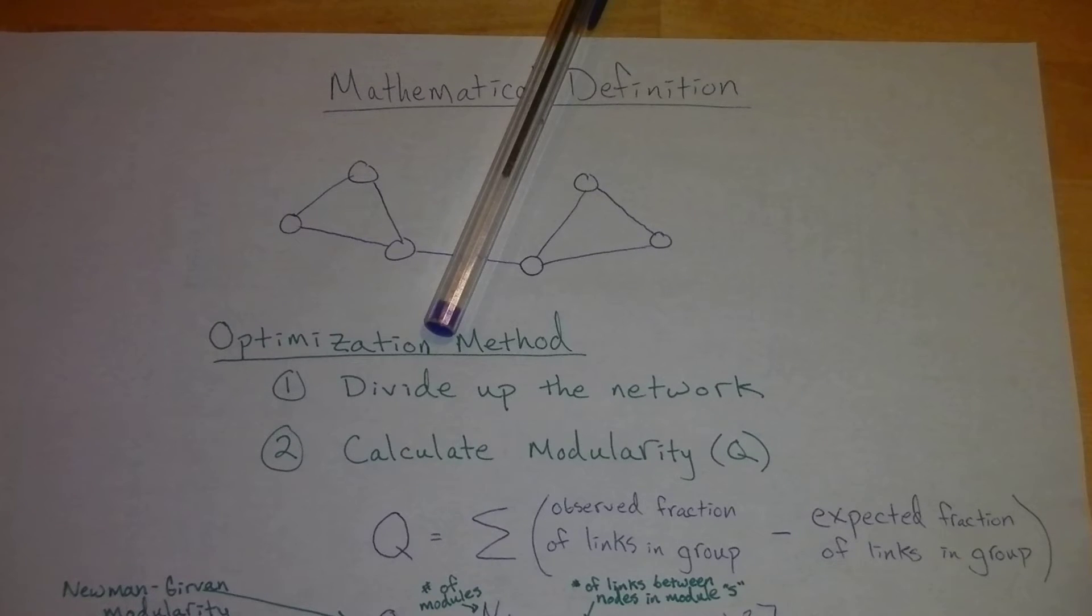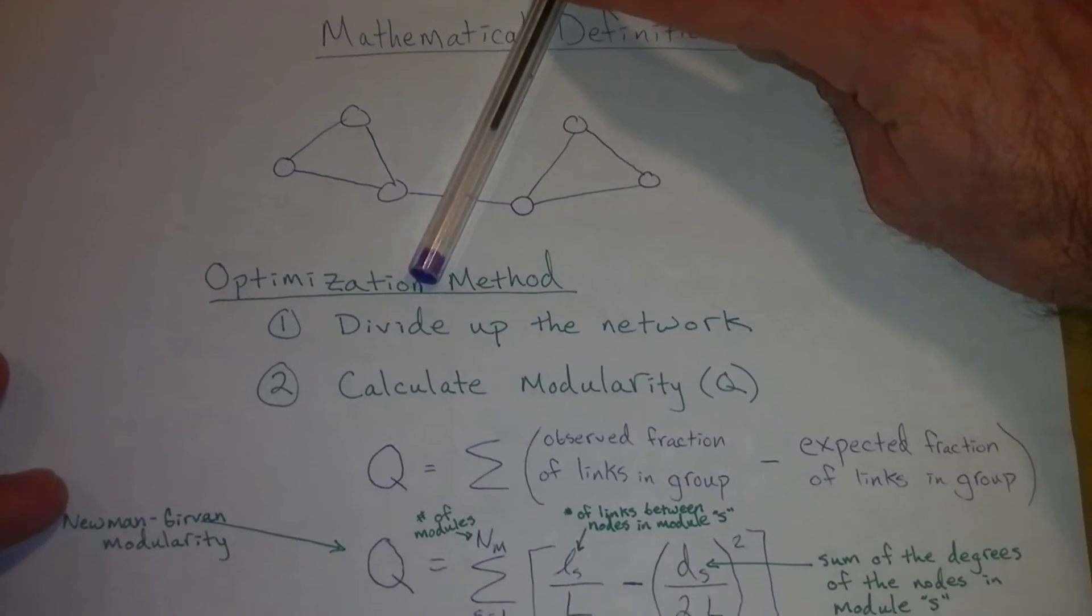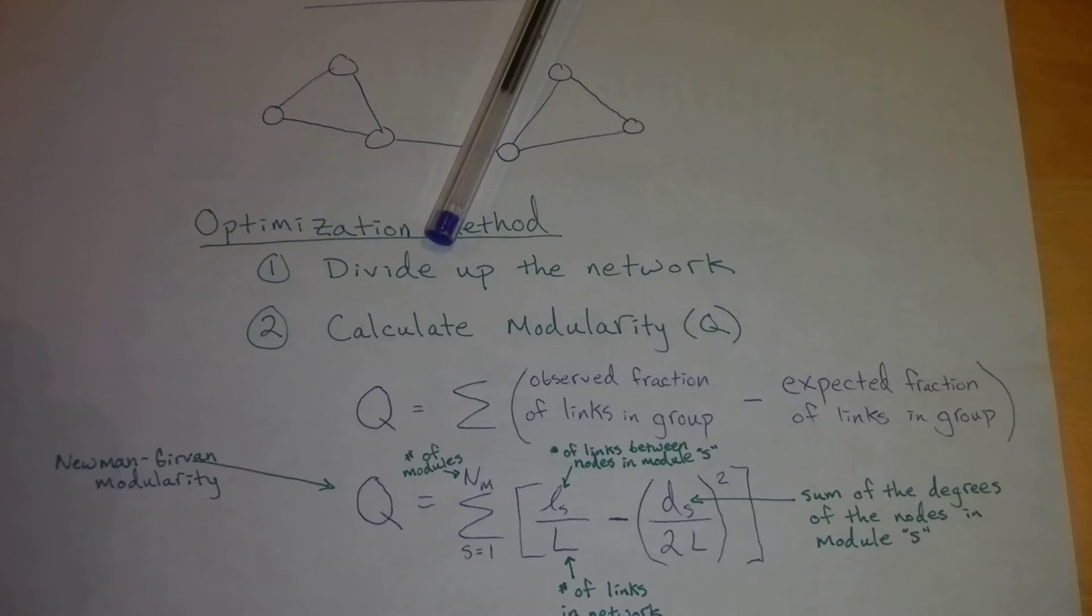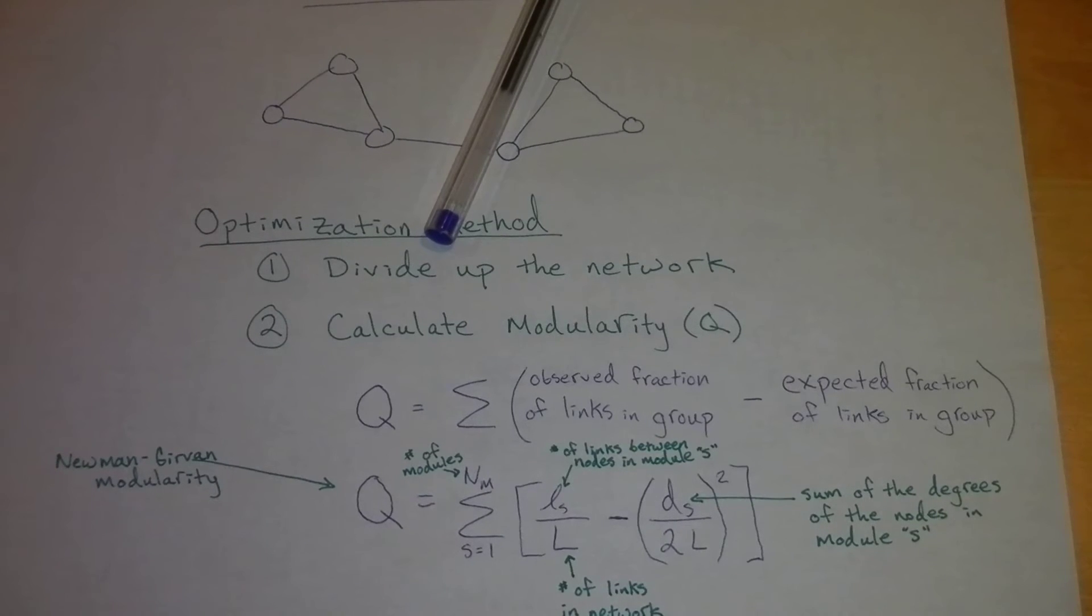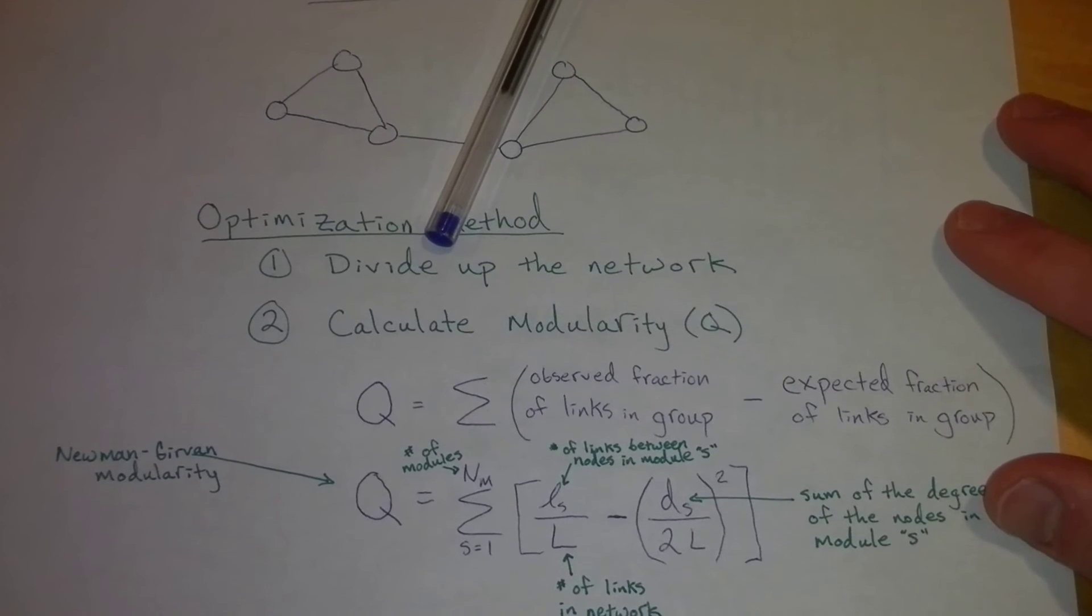Again, we're just looking for groupings with a high density of links, more so than expected by random chance. The way that we actually go about calculating it, this equation down here. Just to note, this is Newman-Girvan's method for calculating modularity, and it's a pretty widespread measure, so it's a good one to get familiar with.